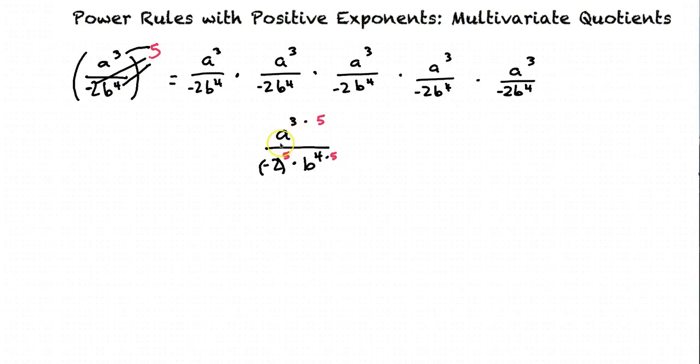written as a to the 3 times 5, all over negative 2 to the 5th times b to the 4 times 5. Because when we raise a power to a power, we multiply the exponents.